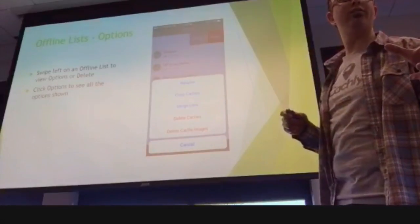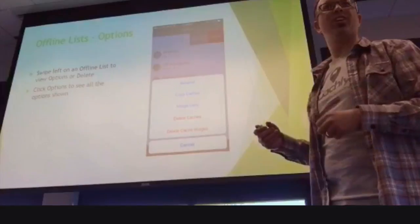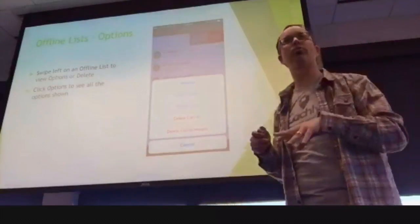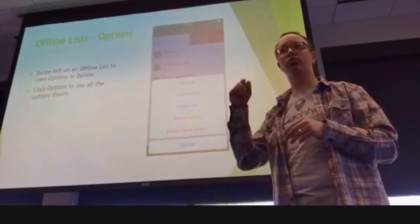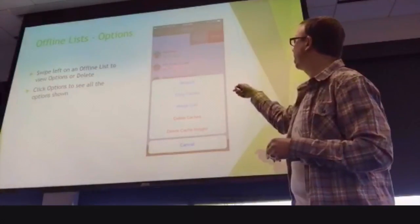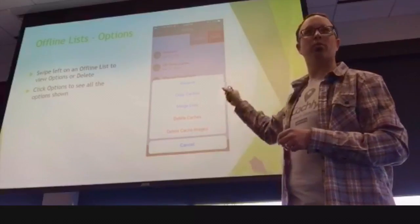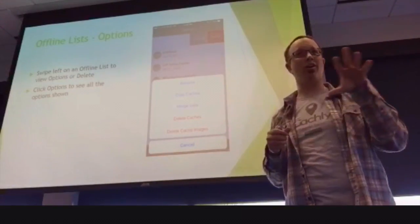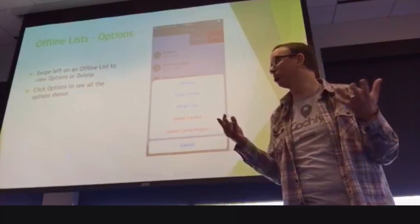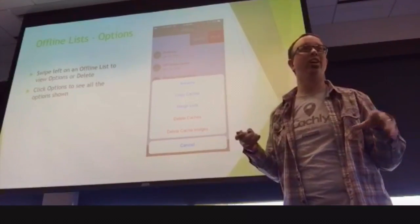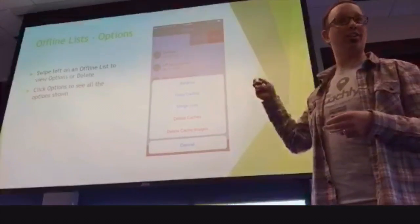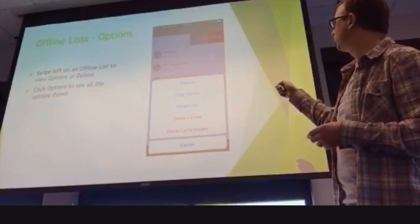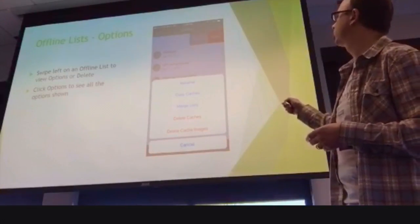One example: I have a list called 'zombies,' which are virtuals that have been archived. You can still log them if you know the GC code. When you look at other people's profiles, if they have created public bookmark lists, you can pull those bookmarks and make your own list. I didn't create this zombie list — Fear the Fish has it. He managed to pull in archived virtuals into a list because the information is still there to log even though the cache isn't active. I downloaded that into my own offline list.